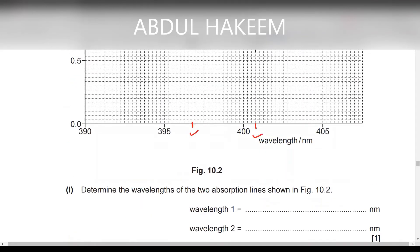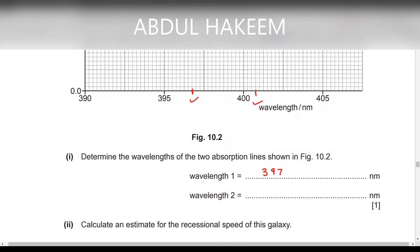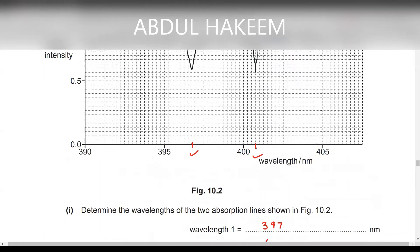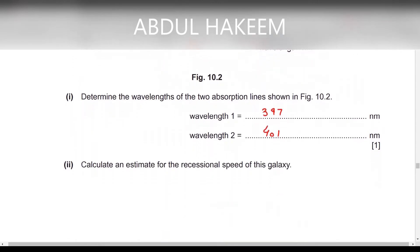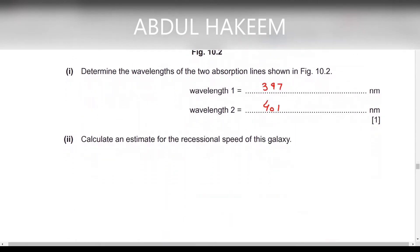We have to read the two values from the figure. The first absorption line is approximately 397 nm — or more precisely 396.8 nm. The second is approximately 401 to 408 nm. The recessional velocity uses the same formula: recessional velocity equals delta lambda over lambda, multiplied by the speed of light.